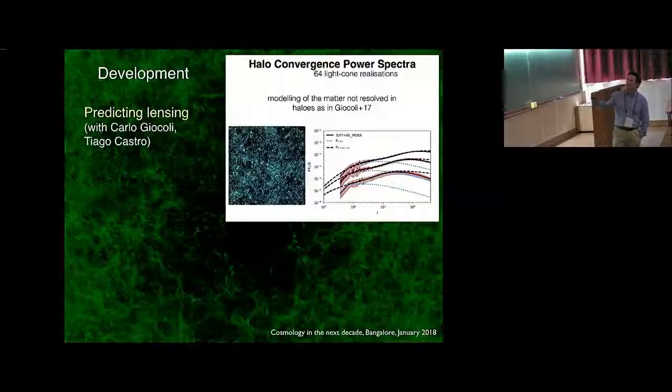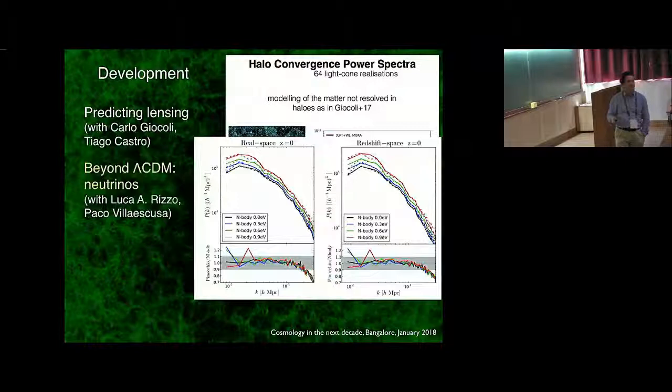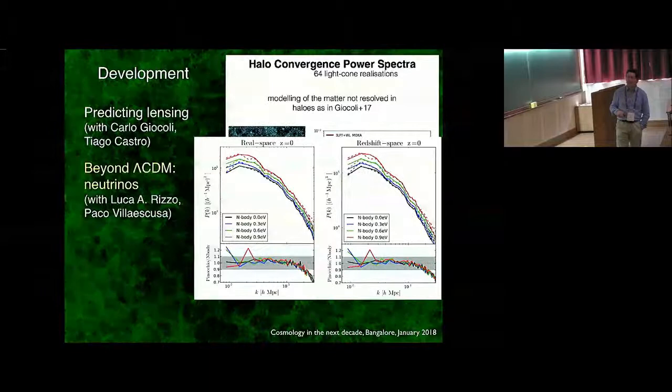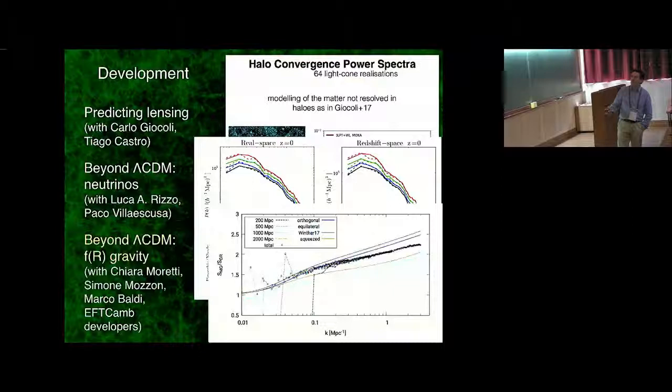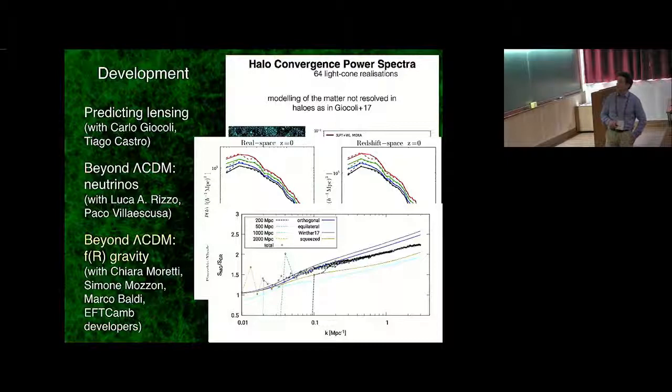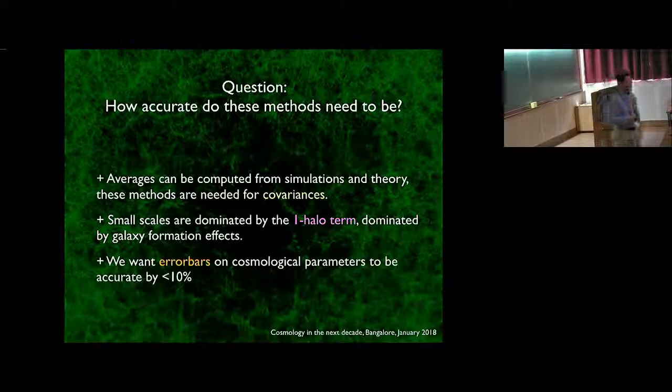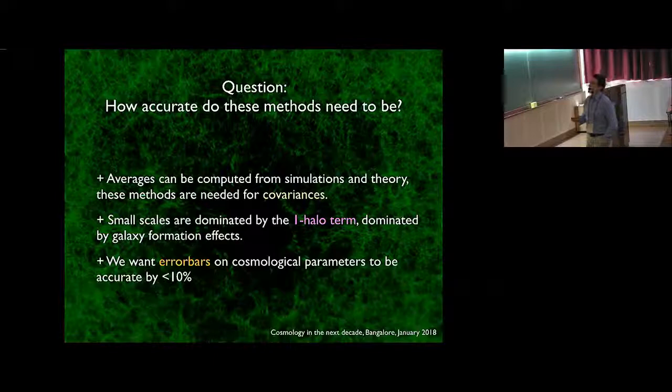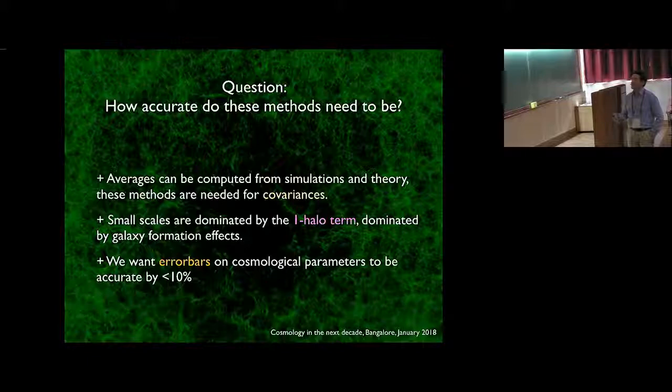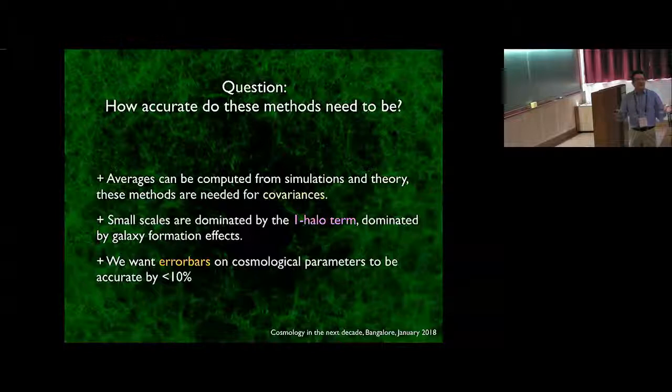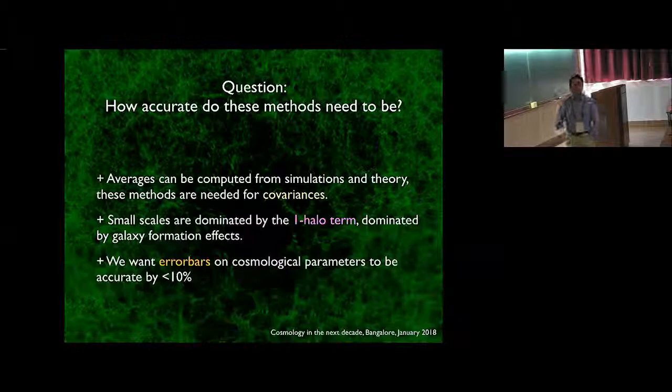I'm developing PINOCCHIO further. I'm trying to do the prediction for galaxy lensing. Also, I'm trying to go beyond Lambda CDM. First, we introduced neutrinos. The trick was working nice. And then we are struggling to find the formulation for F of R gravity. How accurate do these methods need to be? The point is that if you want the average power spectrum for a galaxy, you use either analytic methods or simulations. You want to use these methods to have covariances where you need thousands of realizations. As most scales are dominated by one halo term, you need to be accurate on larger scales and on the variance more than on the average.